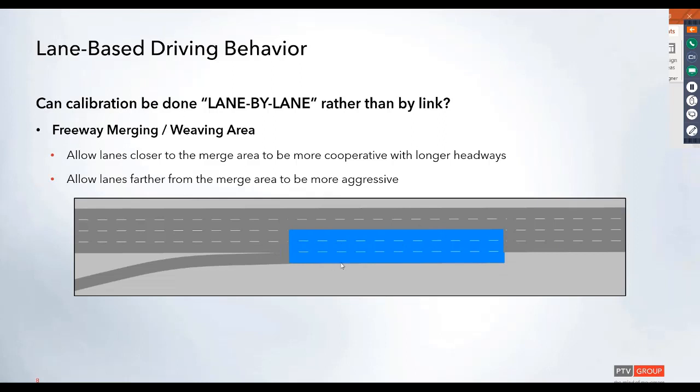For this implementation, we are going to look at maybe making these lanes that are closer to the merge area be a little bit more cooperative with longer headways to allow traffic from the on-ramp to enter the mainline, and have lanes that are farther away from that merge area to be a little bit more aggressive and maybe have some of those shorter headways.